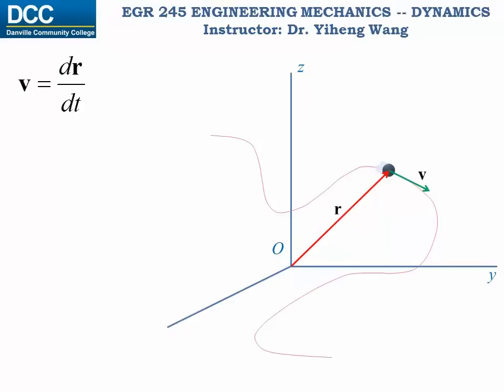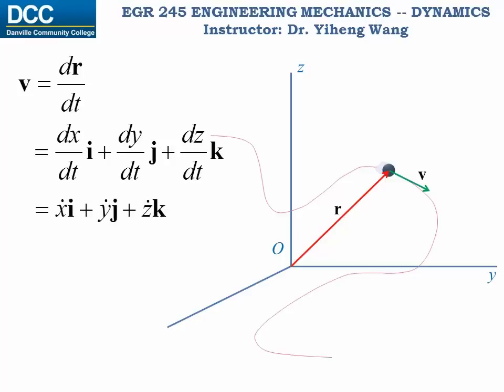And since r equals to xi plus yj plus zk in the rectangular coordinate system, the velocity is dr dt, which is simply dx dti plus dy dtj plus dz dtk, or x dot i plus y dot j plus z dot k. The dots are specific for time derivatives.